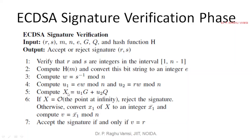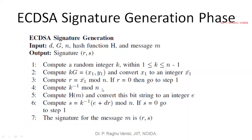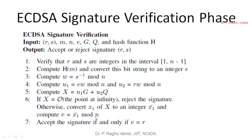If X is point at infinity, reject the signature. Otherwise convert the x1 of capital X to an integer and perform v equals x1 mod n, just as you have done in the signature generation. If v equals the r value that you have got, then accept the signature. Otherwise reject the signature.